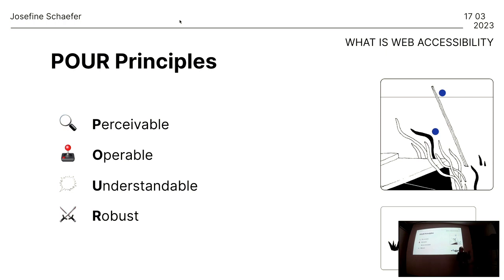The WCAG guidelines are based around the POUR principle — the pillars of what we're trying to achieve. Perceivable means non-text elements should be translatable to larger text, speech, or sign language — for example, providing an alt attribute for an image. Operable means you want to be accessible not only via mouse or trackpad, but also via the keyboard, so everything you create should be operable.